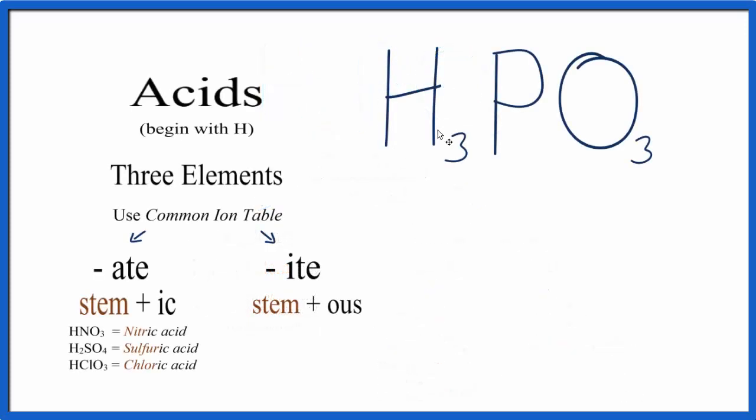We have H here in the front. That tells us it's an acid. And then we have this PO3. That's a polyatomic ion. And because H has a plus one charge, and we have three of them, that means this PO3 will have a minus three charge. So we're going to look at this PO3 three minus up on the common ion table.